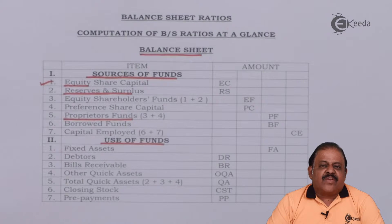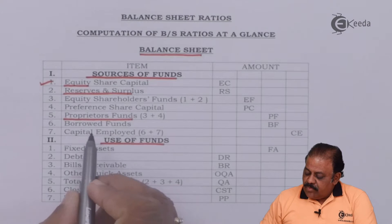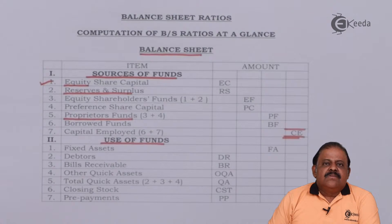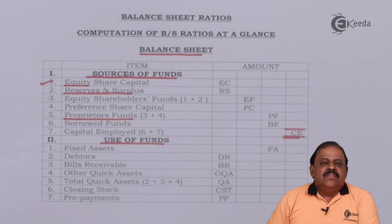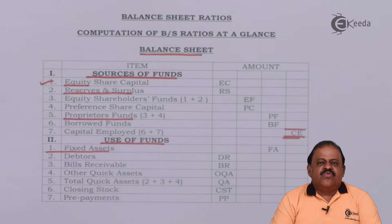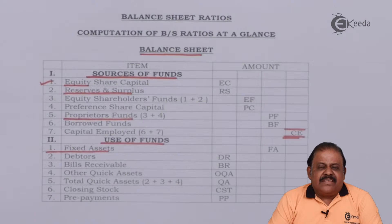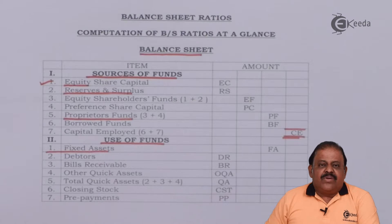Unsecured loans are those on which there is no security given by the company for repayment. For example, public deposits and loans from directors may be unsecured. Total borrowed funds plus proprietors' fund gives us the first part of the balance sheet — total capital employed. The second part is use of funds, that is application of funds. The first item is fixed assets, which includes all tangible and intangible assets such as goodwill, patents, copyrights, plant and machinery, land and building, furniture, fixtures, equipment, and vehicles. We take the written-down book value of fixed assets, subtracting any provision for depreciation.